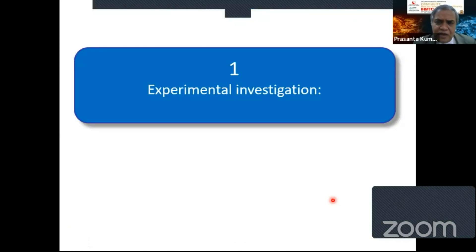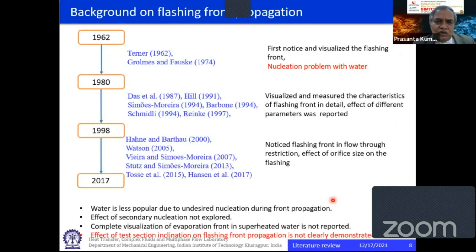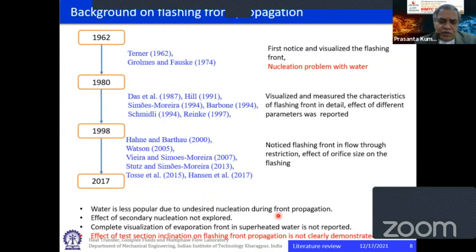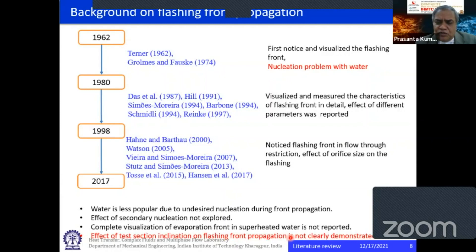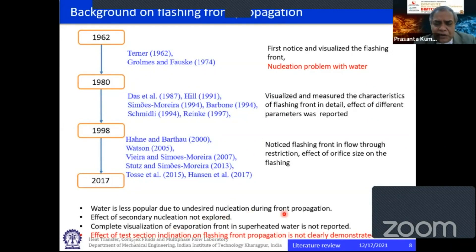Some experimental investigations with unique and new results will now be presented. This shows a timeline and the challenges of experiments. Water is less popular due to undesired nucleation, but water is very important. The effect of secondary nucleation has not been fully explored. Complete visualization of the evaporation front in superheated water — for a larger length from beginning of rupture to the end of the test tube — has also not been reported. The effect of gravity, particularly what happens when the system is inclined rather than vertical, has also not been demonstrated.